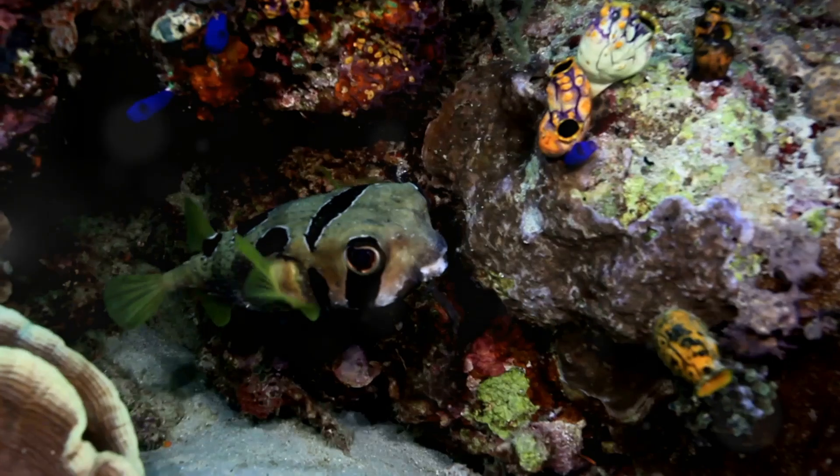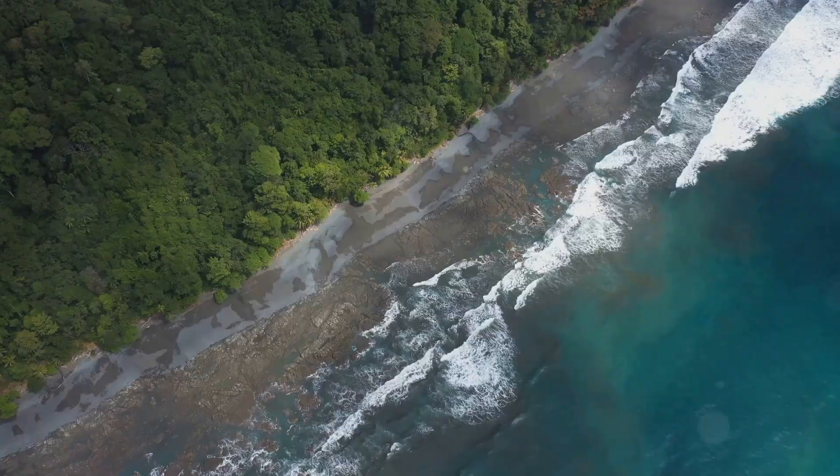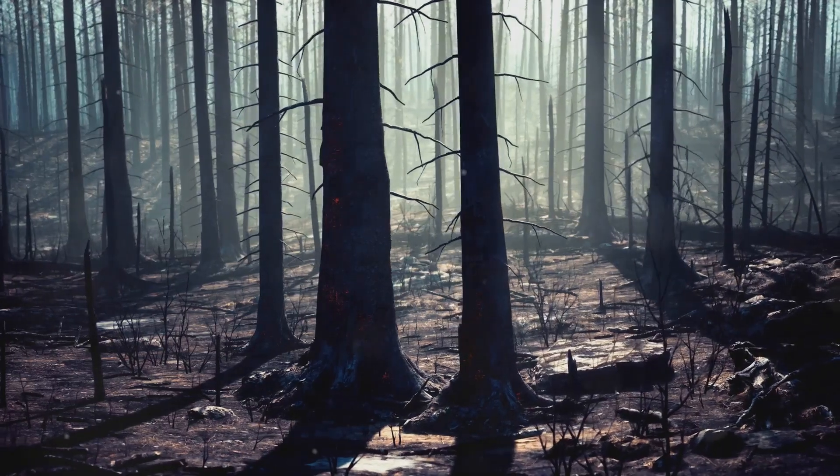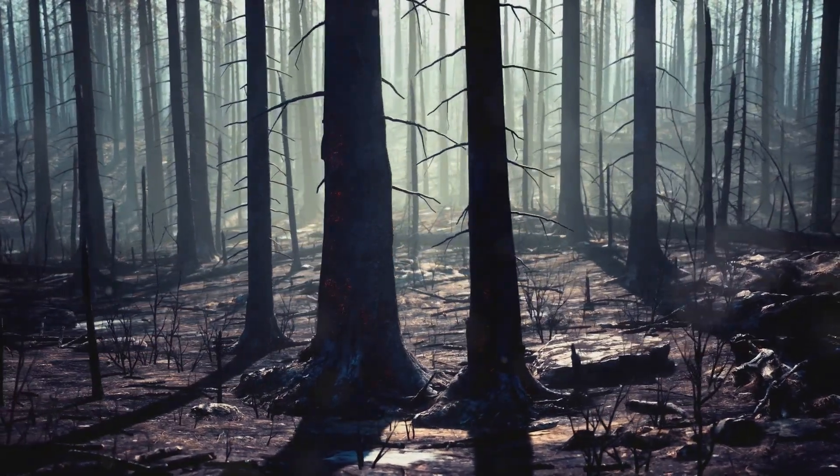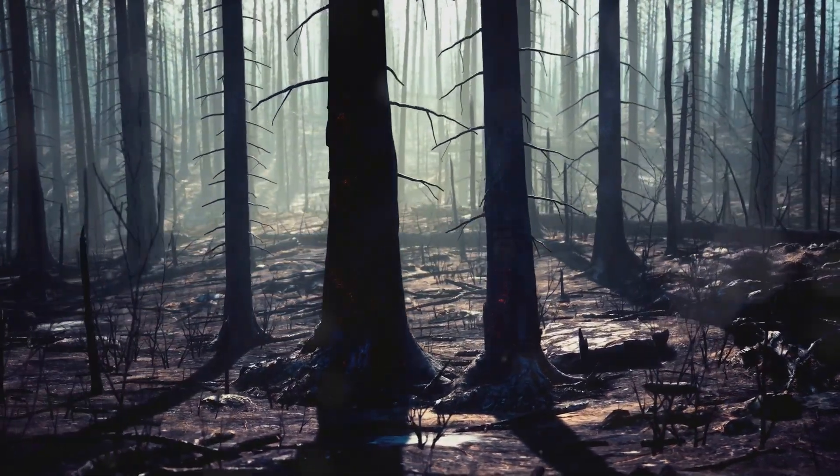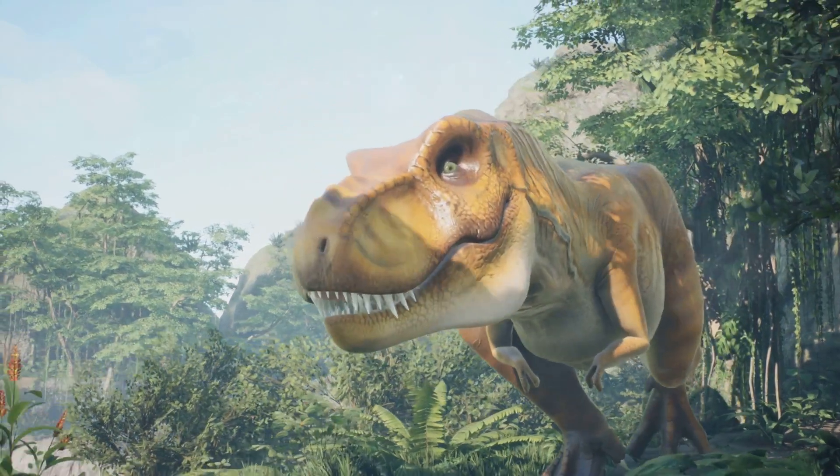As life diversified and flourished in the oceans, a new chapter was about to begin on land. Plants, having established themselves on the shores, gradually spread inland, transforming the barren landscape into a verdant tapestry of forests and swamps. And with this new abundance of plant life came the rise of the dinosaurs.